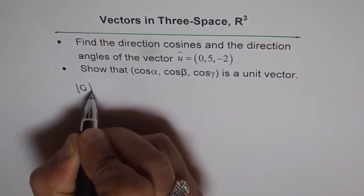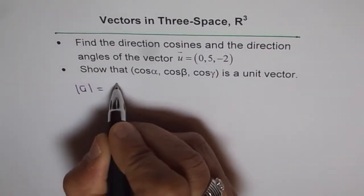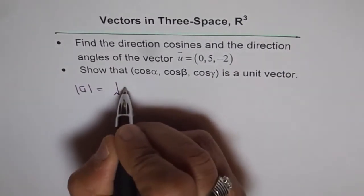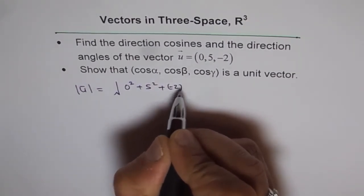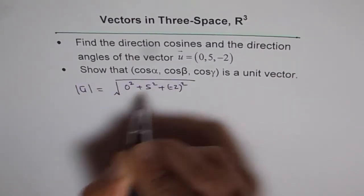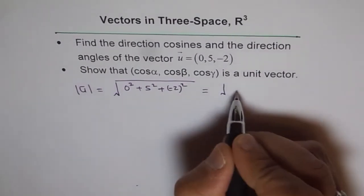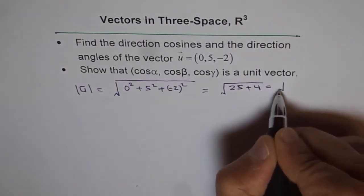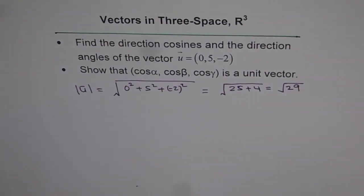What is the magnitude of our vector (0, 5, -2)? These are our direction numbers. We square these numbers and add them up. So it is √(0² + 5² + (-2)²), which gives us the magnitude of this vector. That gives us √29 as the magnitude of our given vector u.